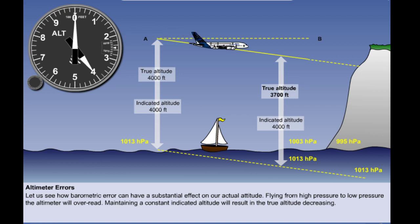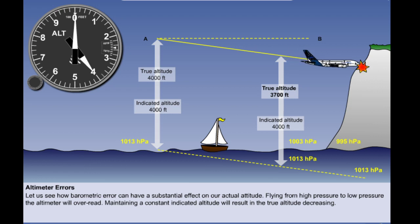You can see what may happen therefore if the atmospheric pressure continues to fall and the altimeter pressure setting is not updated accordingly, especially in cloud or fog. Always remember that when flying towards an area of lower pressure than that set on the pressure altimeter, the altimeter will overread. Maintaining a constant indicated altitude will therefore result in the true altitude decreasing.